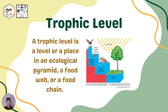Next, trophic level — a level or place in an ecological pyramid, food web, or food chain inhabited by a collection of species that feed similarly. Primary producers are at the bottom, followed by primary, secondary, and tertiary consumers, and finally the top predators. The word 'trophic' relates to feeding or nutrition, so trophic level relates to the nutrition or feeding level — that's why we have different levels at the energy pyramid.